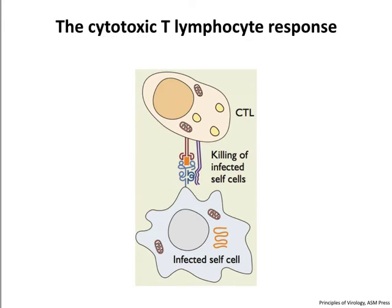Immune evasion is really important for persistence. A big target is the killing of infected self-cells. An infected cell displays a viral peptide on the surface in an MHC molecule. If this is a CTL, it's MHC class I—because the product is endogenous. Viruses have many ways to antagonize peptide display so that infected cells cannot be lysed, and this only has to happen in a handful of cells for persistence to be established.